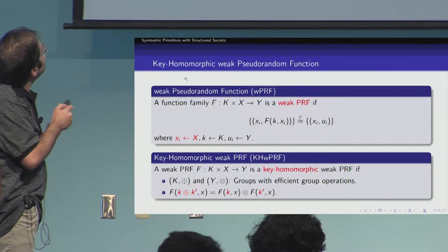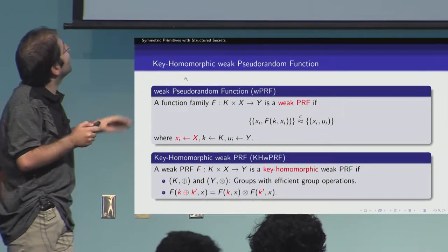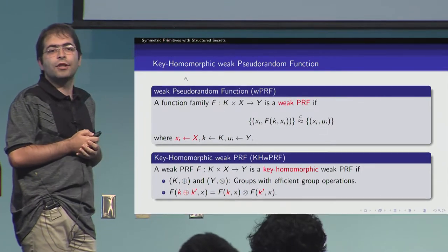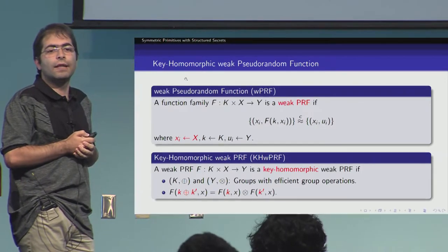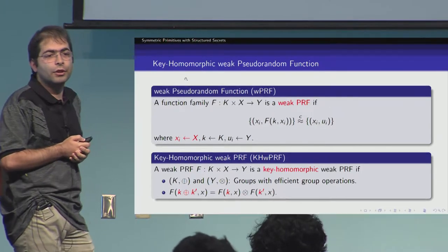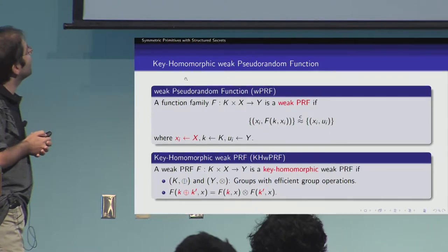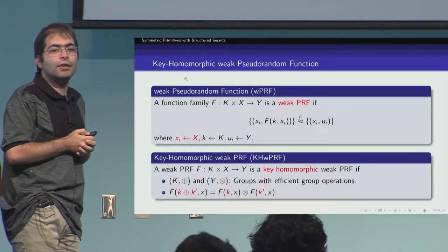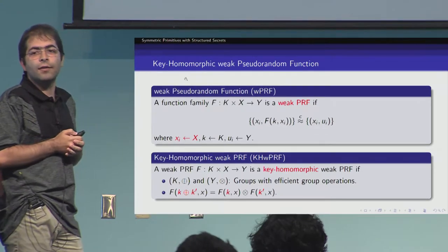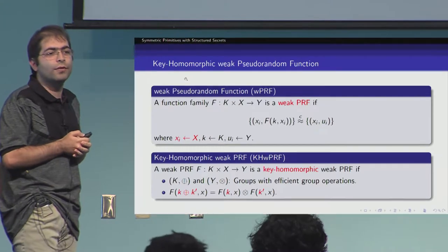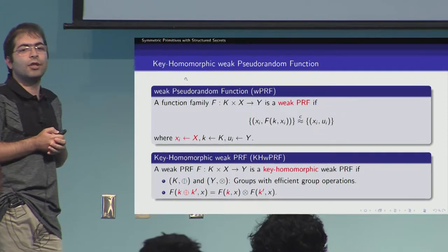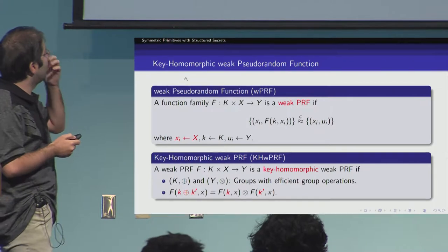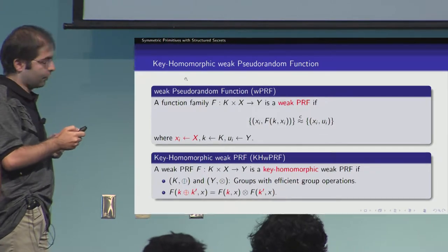It's long been known that we can build weak pseudo-random functions in a generic manner from any one-way function. But with the result of this paper, it doesn't seem likely that when we augment a weak PRF with keyhomomorphism, we can build it in a generic manner from any one-way function, because it implies public key encryption.